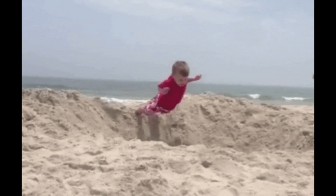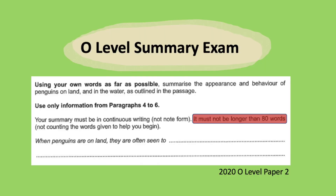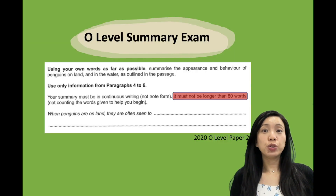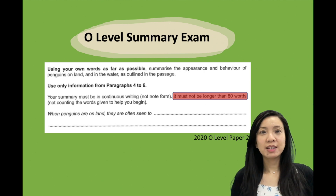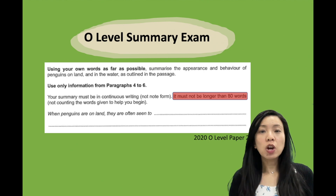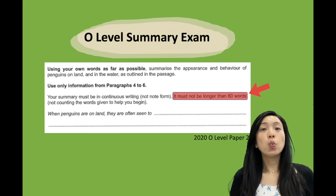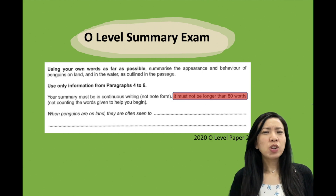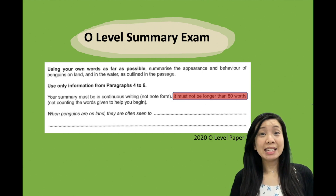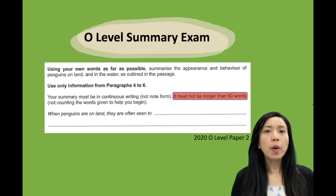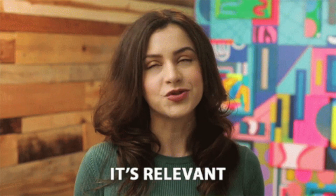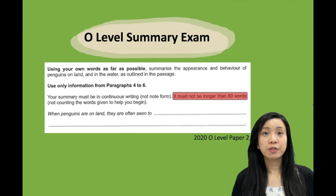Let's jump right into it. This is an example taken from the 2020 O-Level Summary Question. I'm not going to read the whole question to you, but I'd like to point your attention to the words that I've highlighted in red. It says that your summary must not be longer than 80 words, so it's really not easy to cut down the passage to just 80 words.